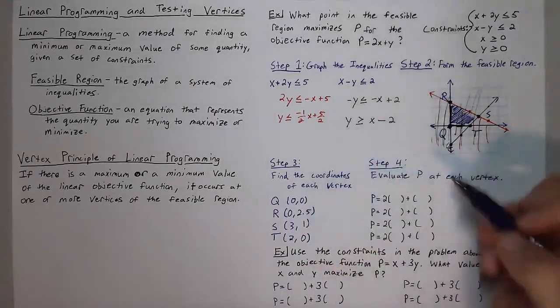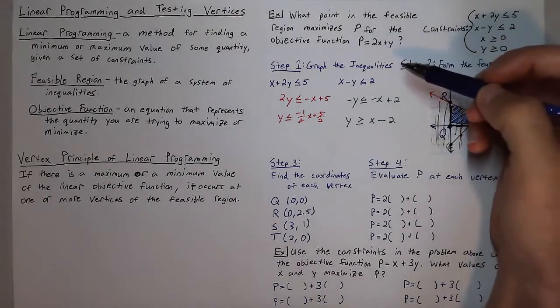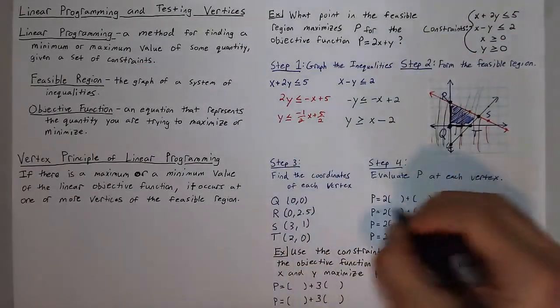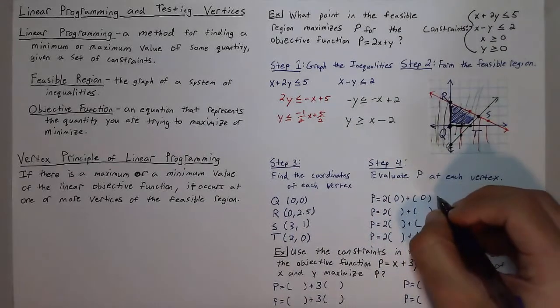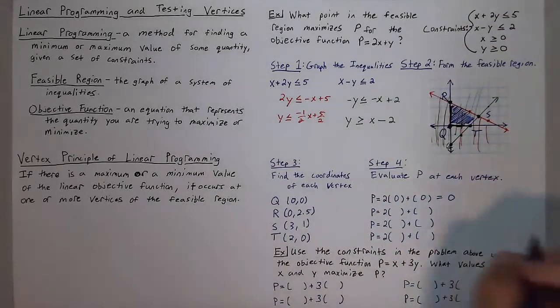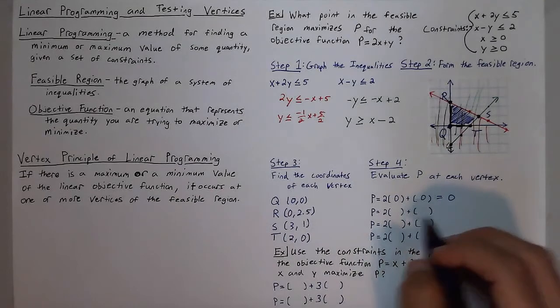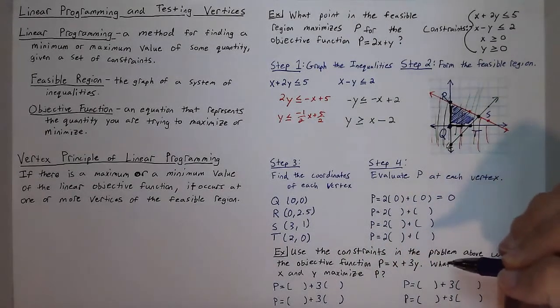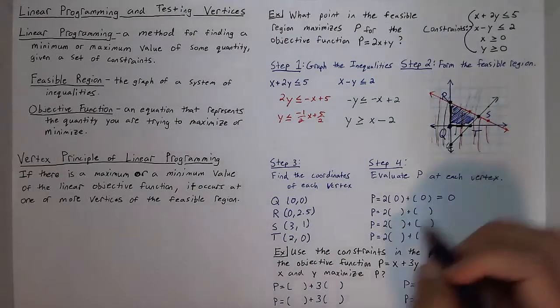Now we're going to take all of these points and plug them into this objective function to see which one gives us the largest value. So plug it in zero, zero. We get two times zero plus zero, which is just zero. And we don't stop there. That's most likely the minimum, but we're going to plug in all four points before we decide which one is going to be our maximum.